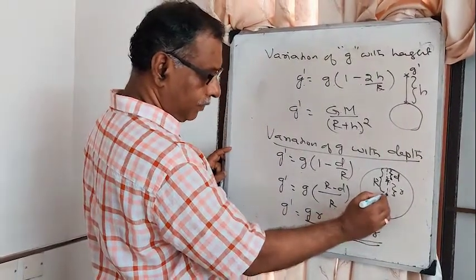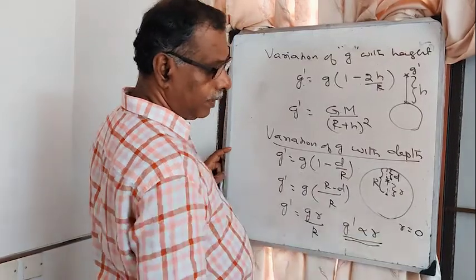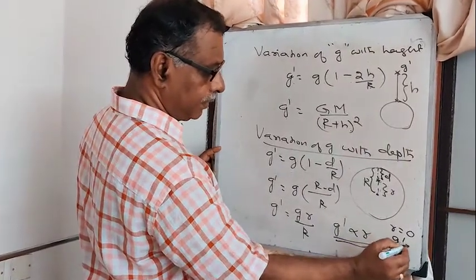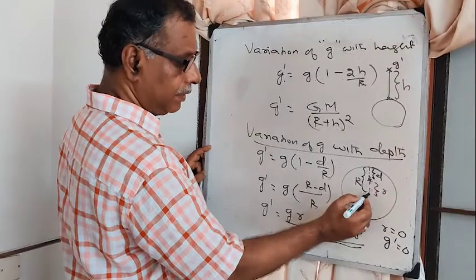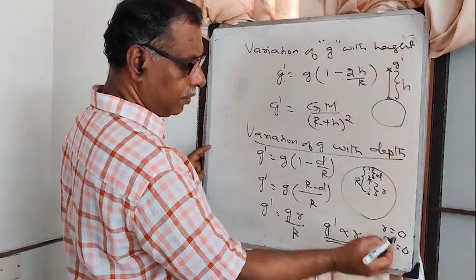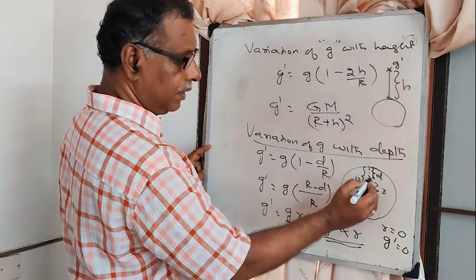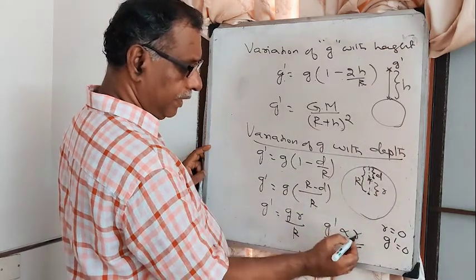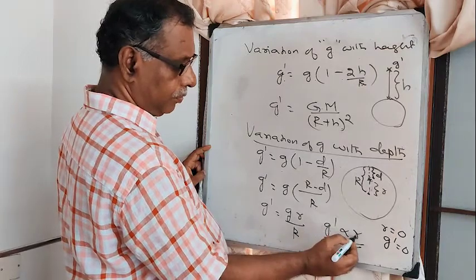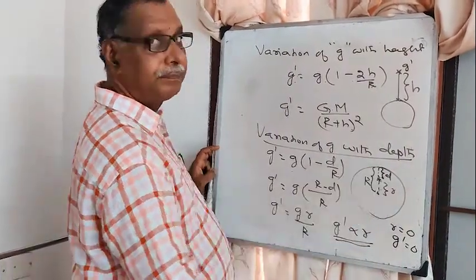At the centre of the earth, the distance r equals zero, therefore acceleration due to gravity g' equals zero. As distance from the center increases, acceleration due to gravity increases linearly up to the surface of the earth.